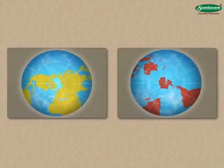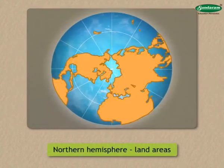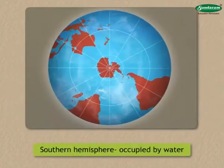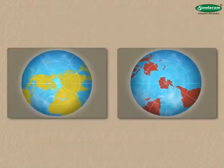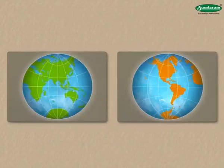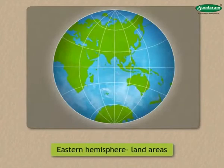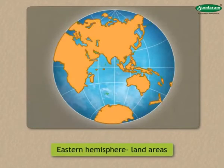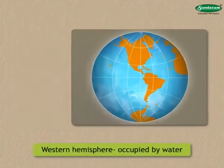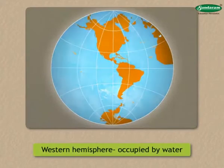The northern and southern hemispheres are shown in the figures. We see more land area in the northern hemisphere, whereas in the southern hemisphere we see more water. The eastern hemisphere has more land area, whereas the western hemisphere has more area occupied by water.